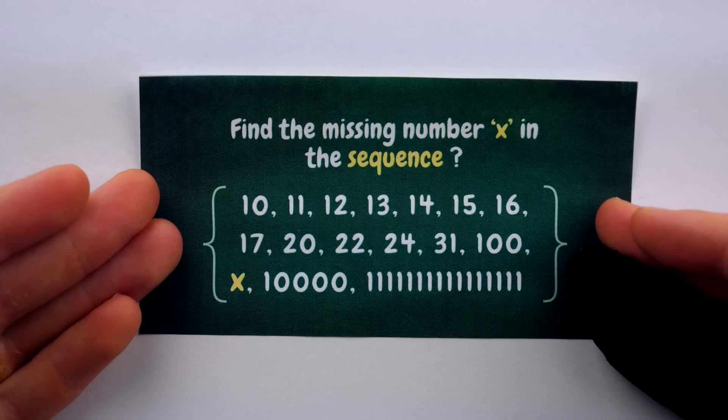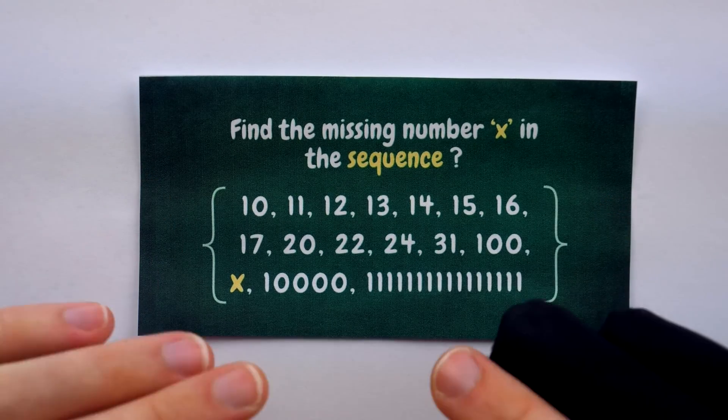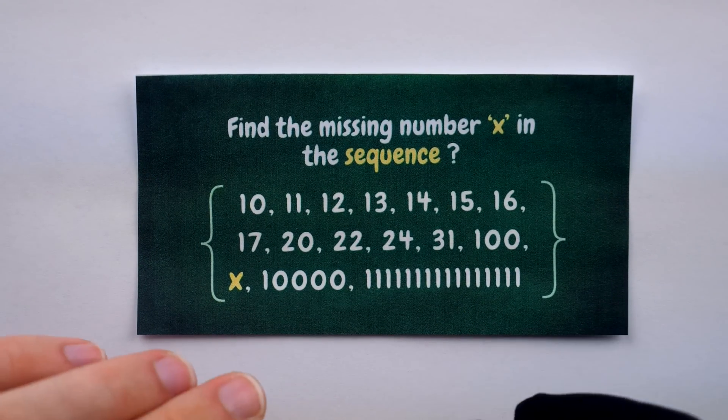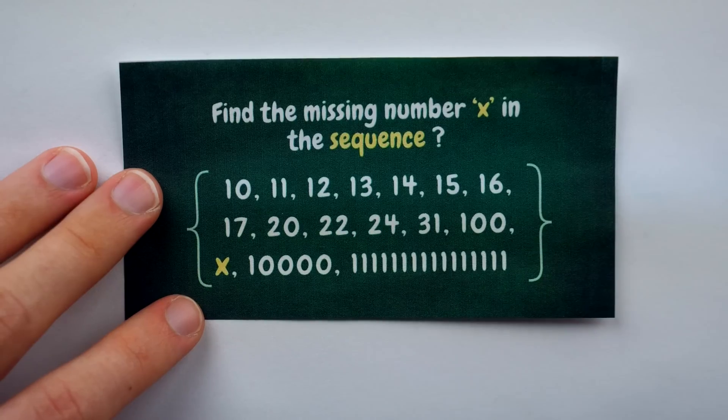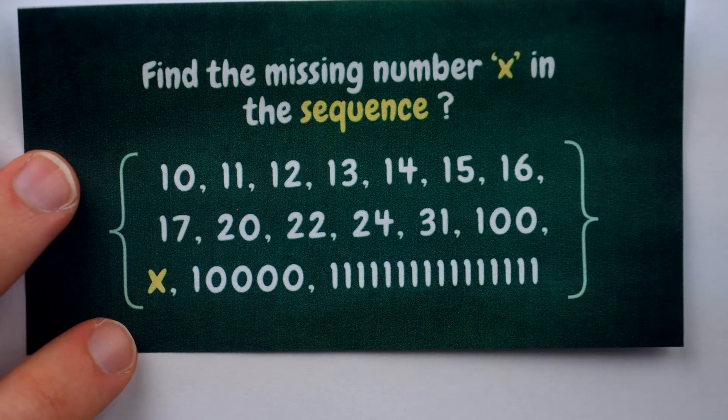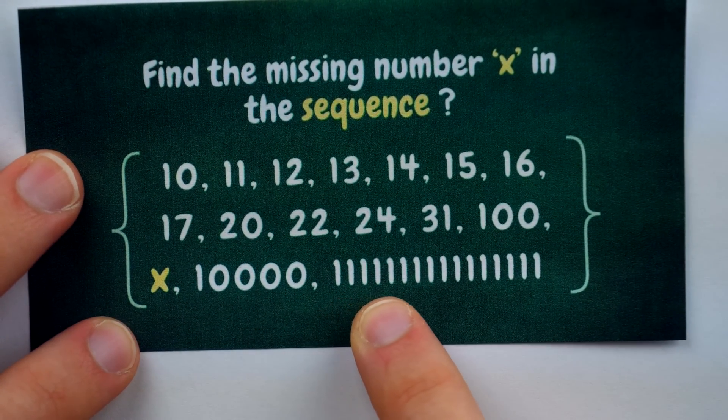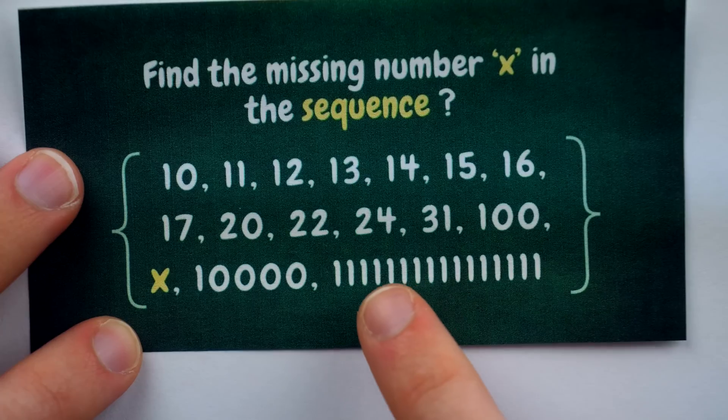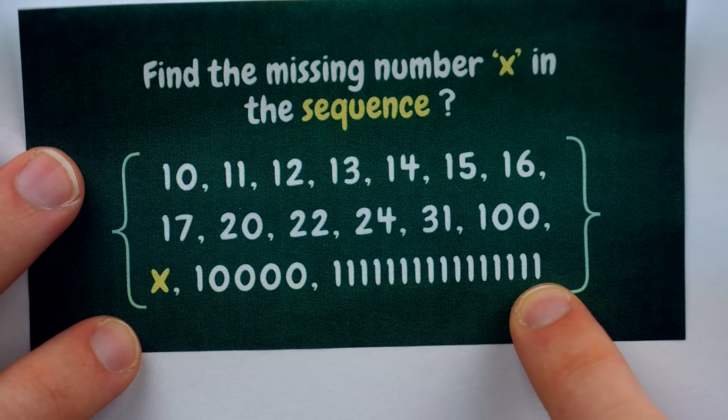To figure out what's underlying this sequence, we should consider its most odd features and see what we can learn from that. Certainly, the last number in the sequence jumps out at us. It is a number consisting only of 1s, and in particular, there are 16 1s here.